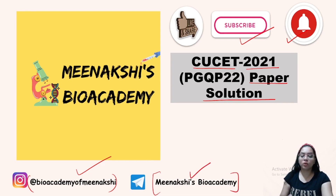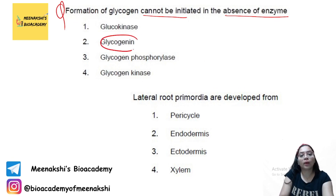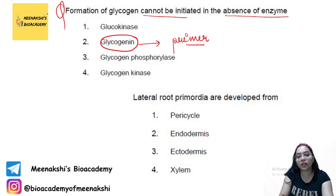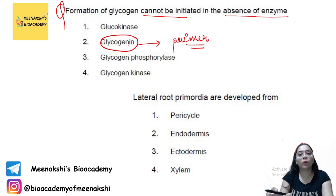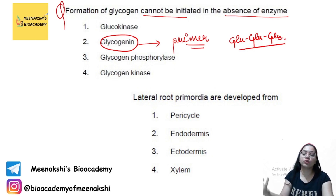The first question: formation of glycogen cannot be initiated in the absence of the enzyme glycogenin. Glycogenin is very important — it acts as a primer at the start of glycogen synthesis. The glucose subunits are already attached, and then glycogenin addition occurs, allowing glycogen formation to proceed. So glycogenin acts as a primer.